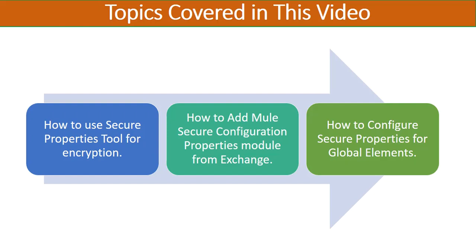Last but not least, we will see that once we have done the necessary work for securing the configuration file and have added the secure configuration module from Exchange, how we can configure the secure properties global element and use our secure properties to configure our global elements — to securely connect to external systems. For our scenario, we will be connecting to a MySQL database using the secure configuration properties file.